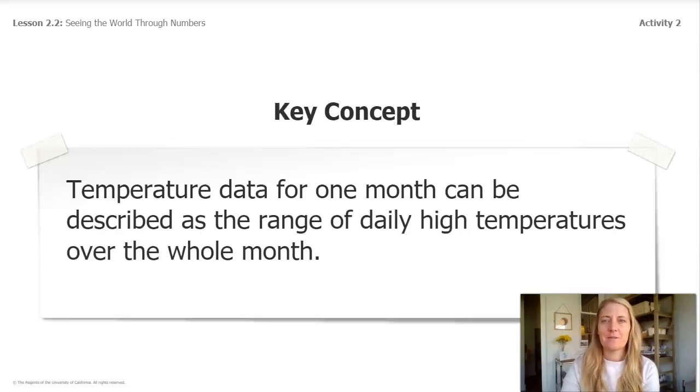Here is our key concept to remember today. Temperature data for one month can be described as the range of daily high temperatures over a whole month.